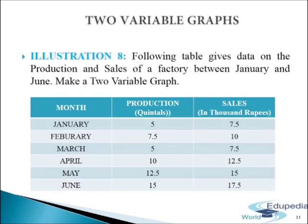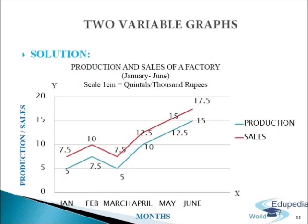Two variable graphs: these graphs represent values of two variables on a graph paper with respect to some time period. Time is taken along the x-axis and the values of the variables are taken along the y-axis. The values of both variables are plotted against the corresponding time periods. The plotted points of both variables are joined by straight lines. The graph so drawn shows a trend representing variations in the variables through the fluctuations of the lines or curves. Let us understand this with the help of the following illustration. With the data given for production and sales of a factory between January and June, we will make a two variable graph. First, we will start with the heading: production and sales of a factory between January and June. For this particular graph, we have taken scale 1 cm equals to 5 quintals for production and 5,000 rupees for sales on the y-axis.